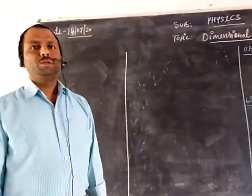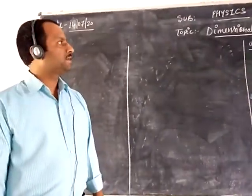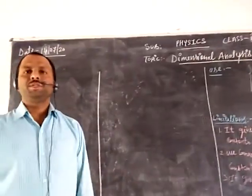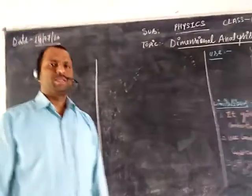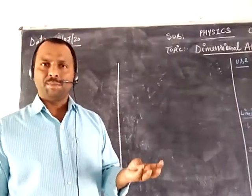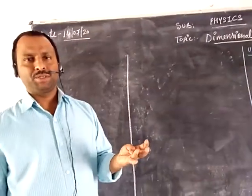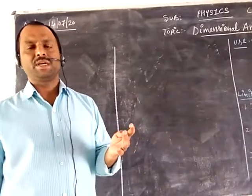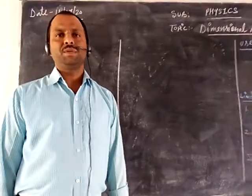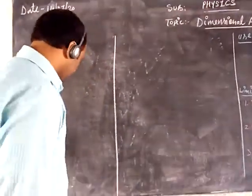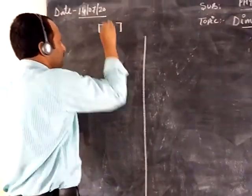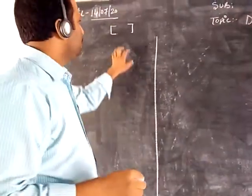We will learn a new topic: dimensional analysis in class 11. First, there is a need to know the meaning of dimensions. There are 7 fundamental quantities: length, mass, time, temperature, electric current, luminous intensity, and quantity of matter. These are the 7 dimensions of the physical world, and they are written in square brackets.